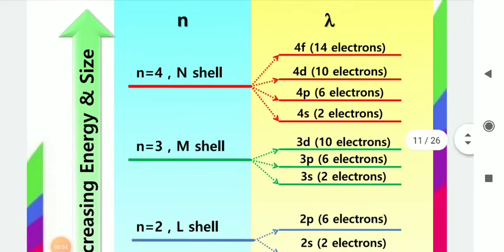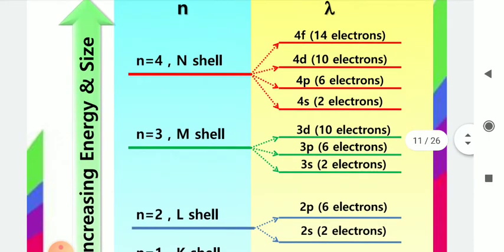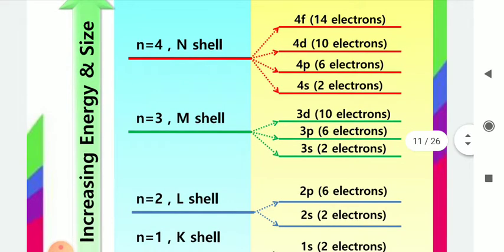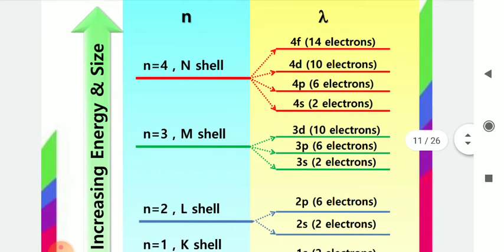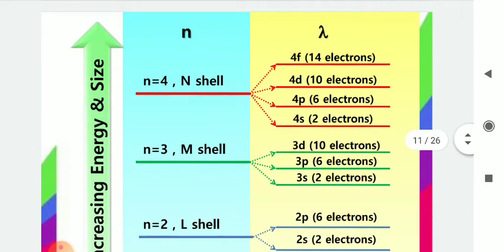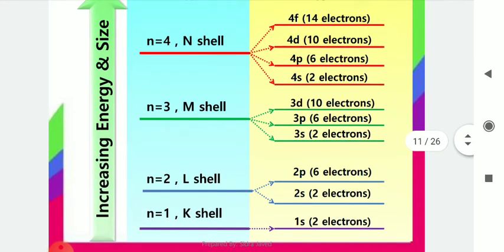Hello and welcome to all students. In our previous lecture we discussed two quantum numbers — the principal quantum number and azimuthal quantum number — and their combined information in the form of a table. In this lecture, we are going to discuss that information in the form of increasing energy and size.